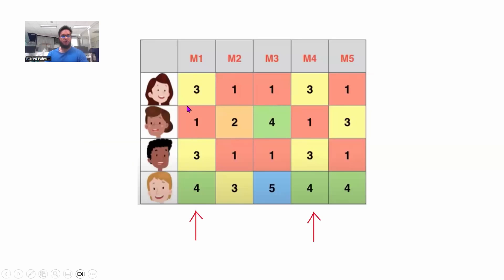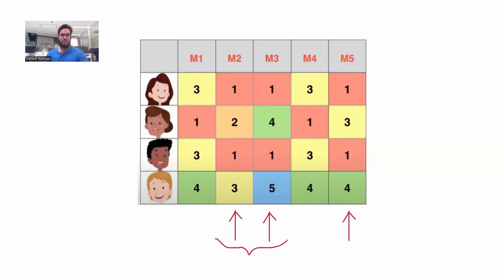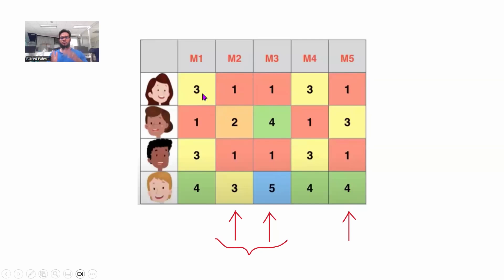And maybe the last person likes both action and comedy. We can see similar things in movies as well. Movie M1 and movie M4 have very similar ratings across different people, meaning they may be very similar movies. Similarly, M5 is actually an average of the M2 and M3 columns — for example, 3 is the average of 2 and 4. So suppose M2 is a comedy movie and M3 is action; M5 may have some of both. When we put all these ratings in a table, that table actually has patterns.